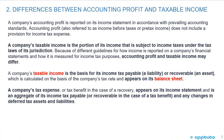Let's review the slide that we've seen in our previous LOS — differences between accounting profit and taxable income. A company's accounting profit is reported on its income statement in accordance with prevailing accounting standards. Accounting profit, also referred to as income before taxes or pre-tax income, does not include a provision for income tax expense.